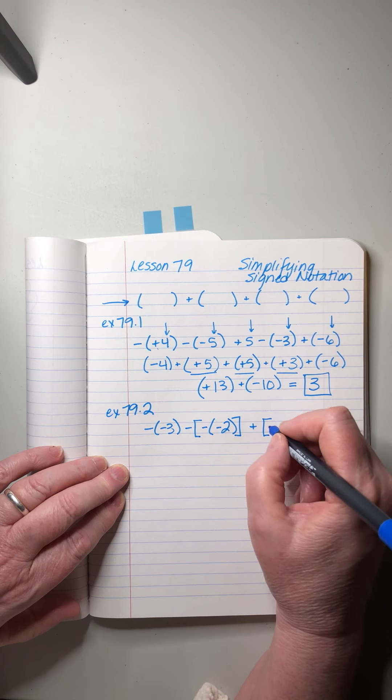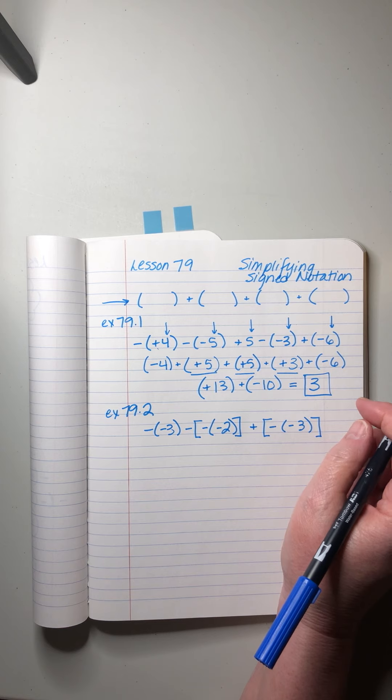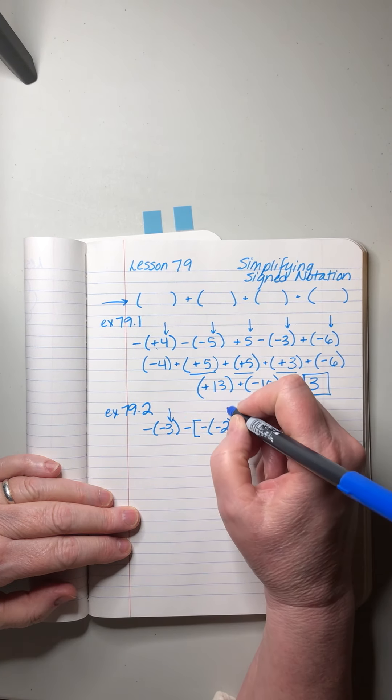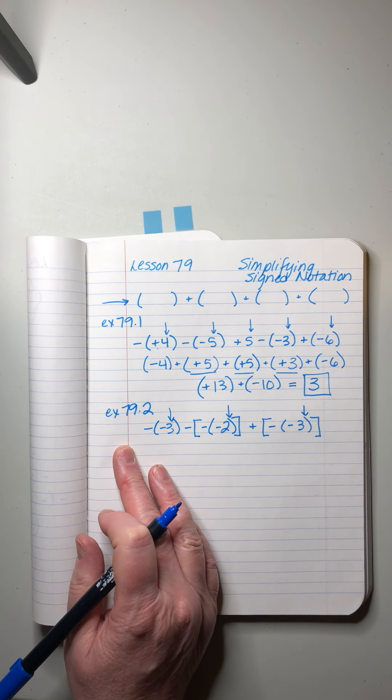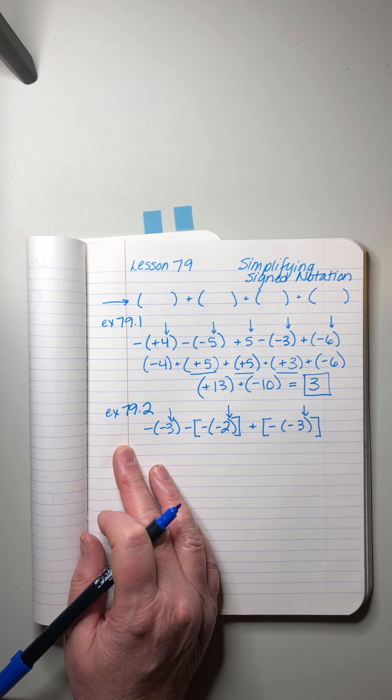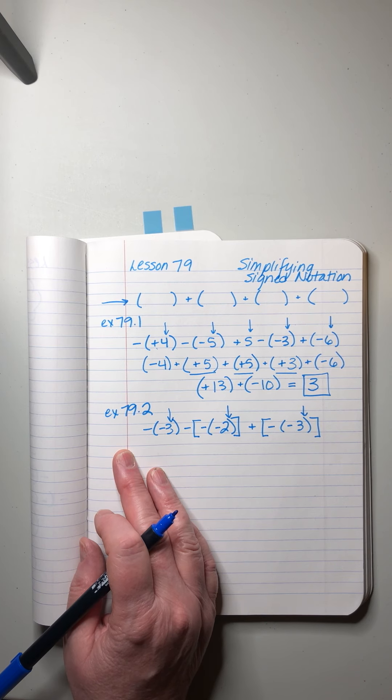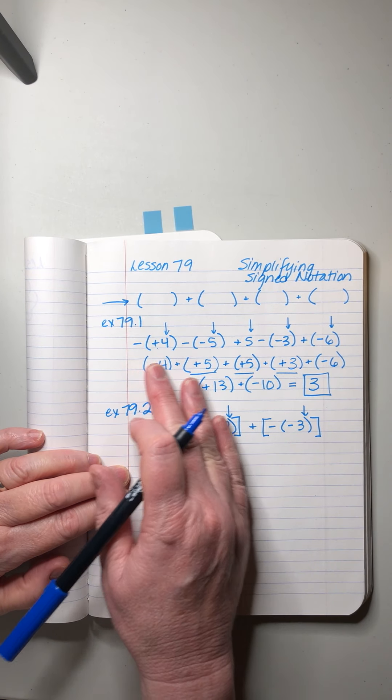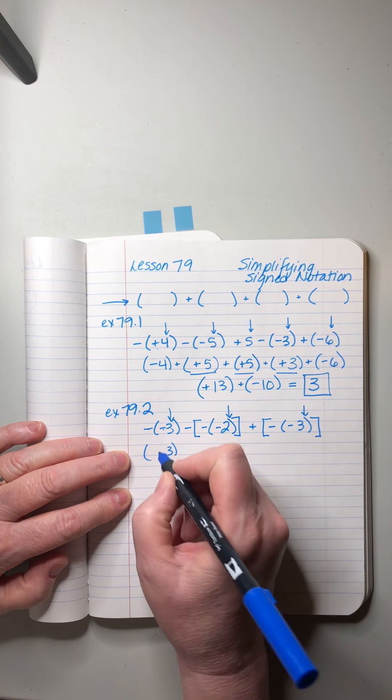These are like fancy schmancy boxcars that have layers, and we don't want that, that's too much drama. Once again, it really helps if I focus in on the numbers and then I pay attention to all the signs that precede them. We have that luxury in this type of problem because all we're doing is adding and subtracting. There's no multiplying or dividing or anything else going on here, so we don't have to worry about order of operations. We just look at all of these signs and simplify them into simple little boxcars.